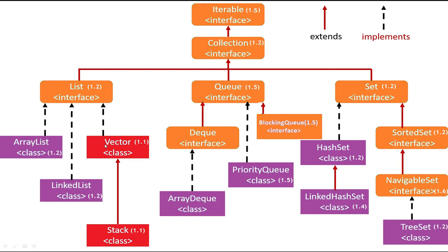For List, we can use ArrayList, LinkedList, Vector, and Stack — though Vector and Stack are legacy classes, we can still use them if our requirement matches. For Queue, we have Deque, BlockingQueue, PriorityQueue, and ArrayDeque. For Set, we have HashSet, then LinkedHashSet, then SortedSet — which is mostly used for sorting data in natural or customized order, either ascending or descending. Then we have NavigableSet and TreeSet, which is the implementation class of SortedSet and NavigableSet.